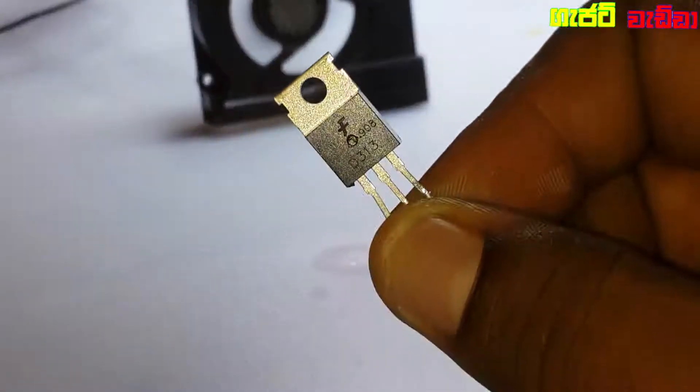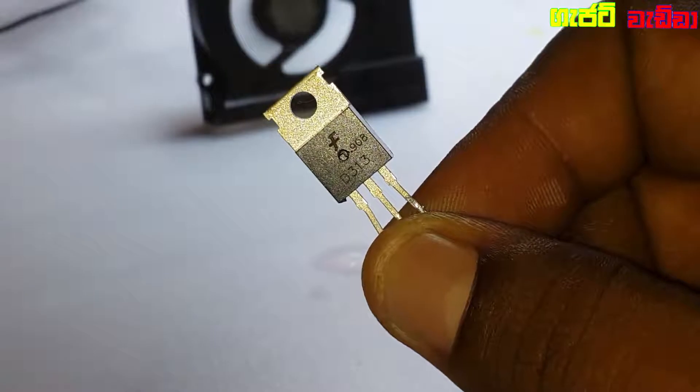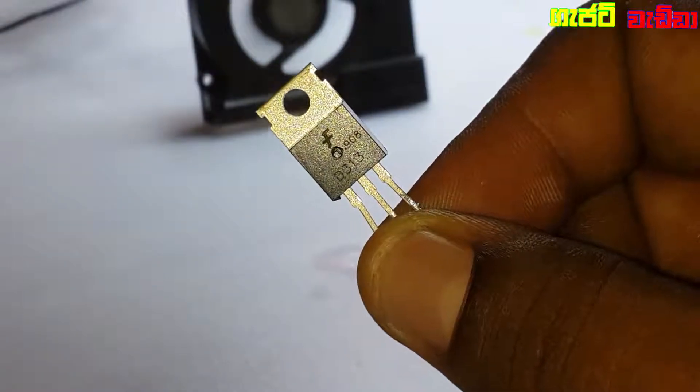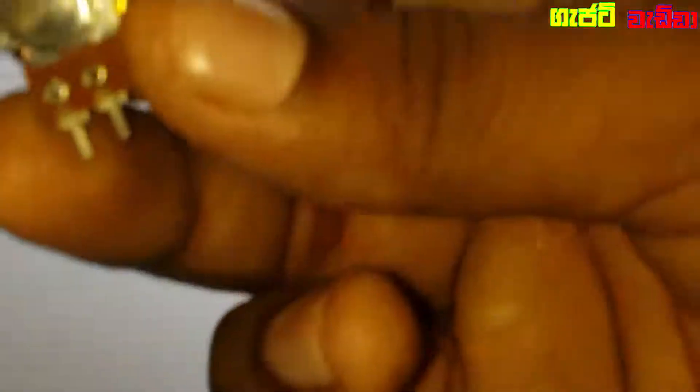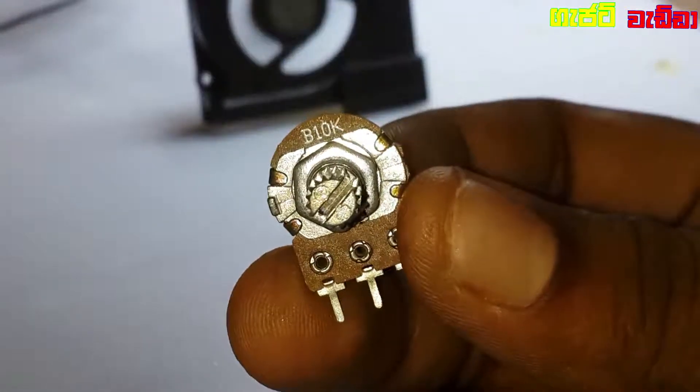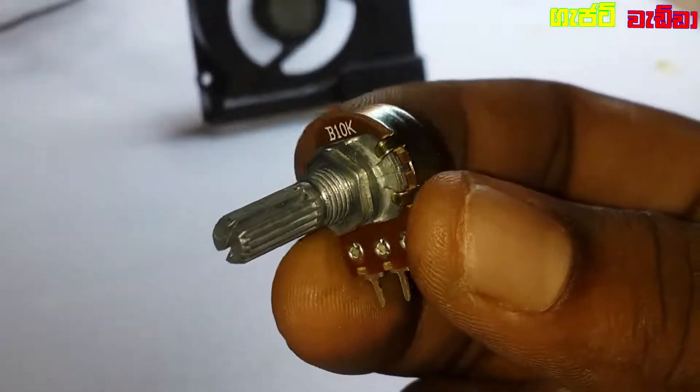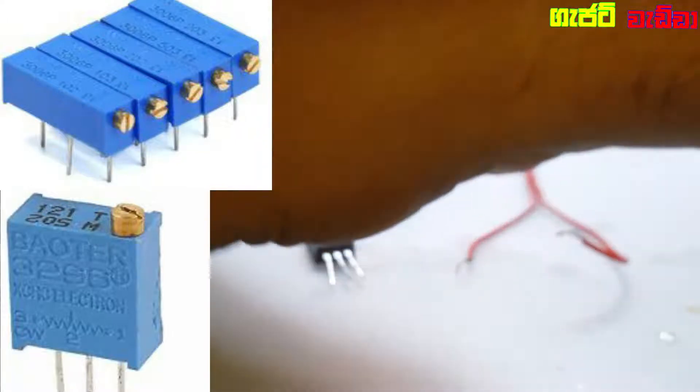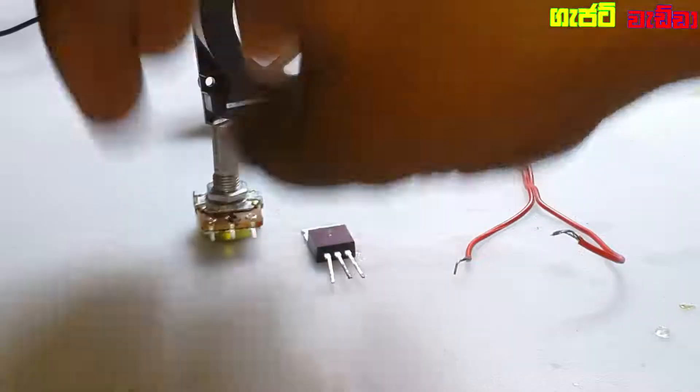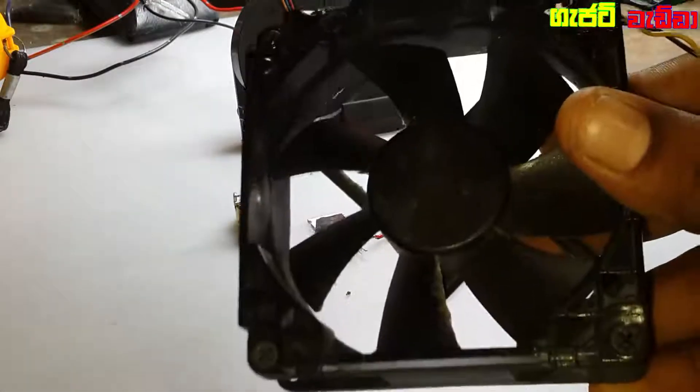This is an NPN transistor, this is a D2C. This is a 10K potentiometer, this is a multi-turn potentiometer. This is a cooling fan with a 12V load.